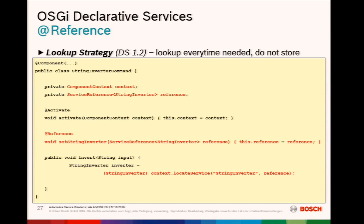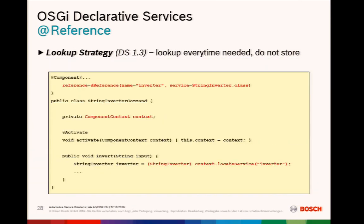The lookup strategy: you get the component context injected and then when you actually need the service, you look it up. In DS 1.2 you have one approach, while with DS 1.3 you additionally have the reference attribute on @Component making the lookup shorter and more compact. The use case for the lookup strategy relates to the lifecycle — when the component is activated, we have the reference.